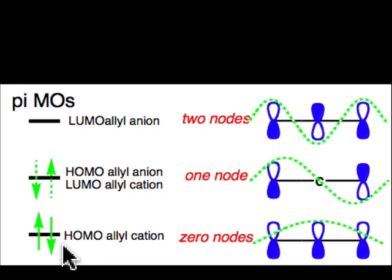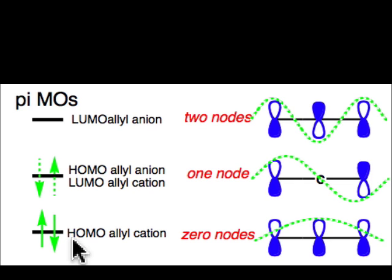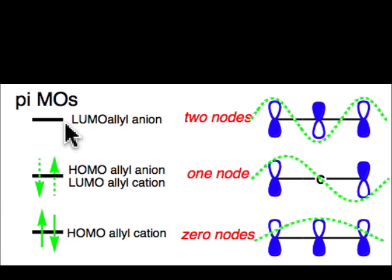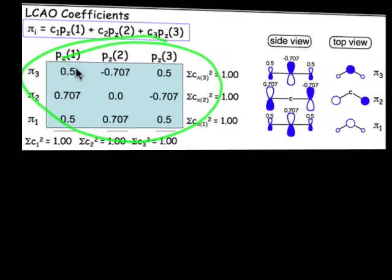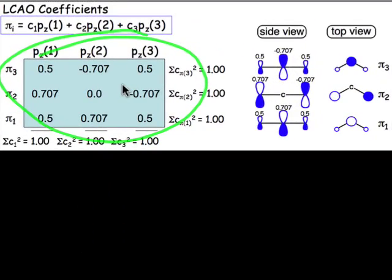The energies will look like this. That zero-node molecular orbital will be the highest occupied molecular orbital in the case of the 2 pi electron allyl cation. The lowest unoccupied molecular orbital for the allyl cation will be that one-node pi molecular orbital. That'll be the HOMO for the allyl anion, and that leaves that two-node pi molecular orbital as the LUMO for the allyl anion. Here's the coefficient matrix that results from our LCAO analysis.